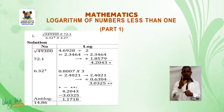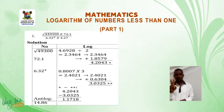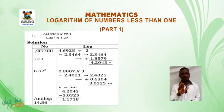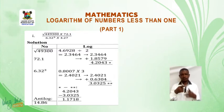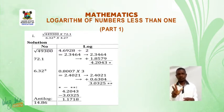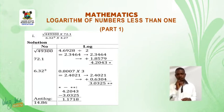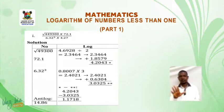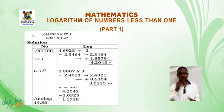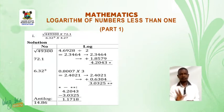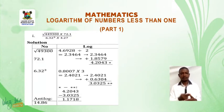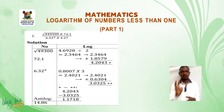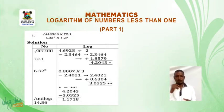So adding them together we get 3.0325. So the first one which has 1 star there, that is 4.2043 minus the one with 2 stars, 3.0325. When we subtract 3.0325 from 4.2043, we get 1.1718. Now we find the antilog of that one and the antilog gives us 14.86 because we have 1 as the characteristic there.